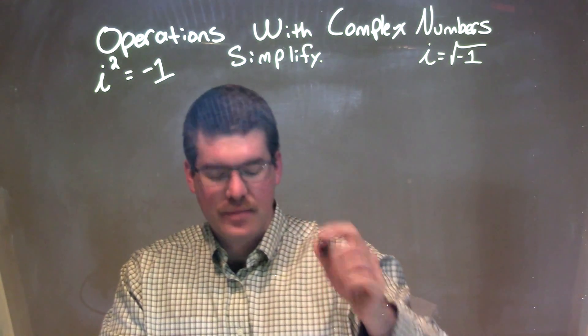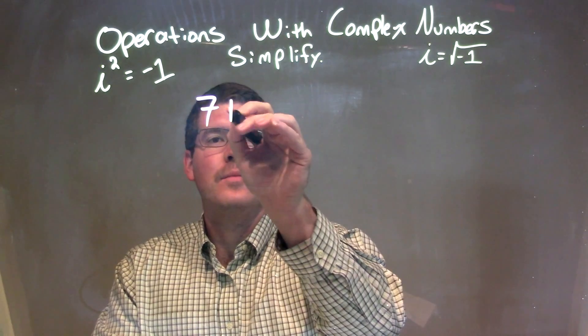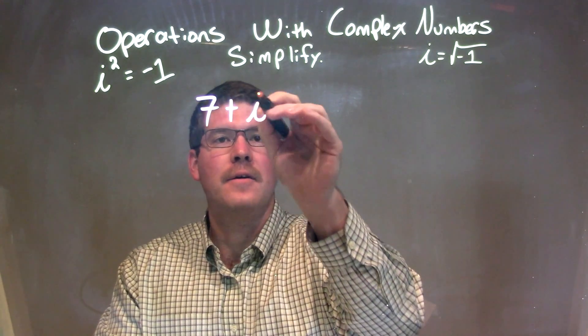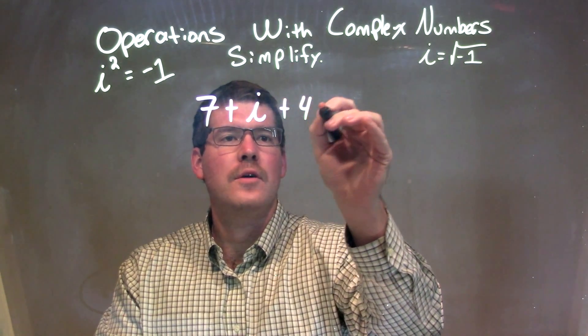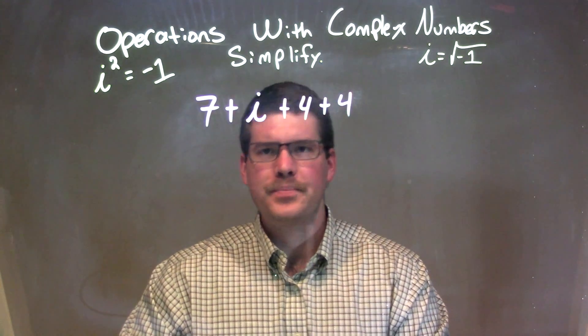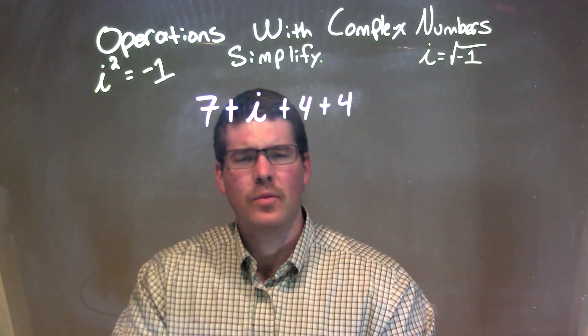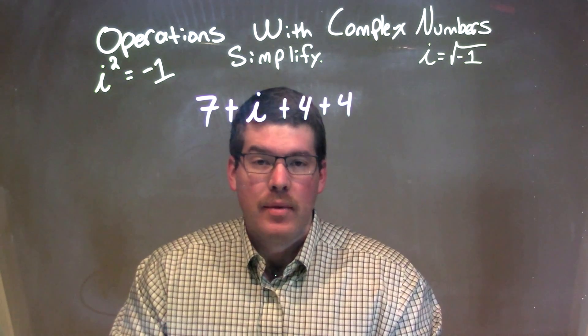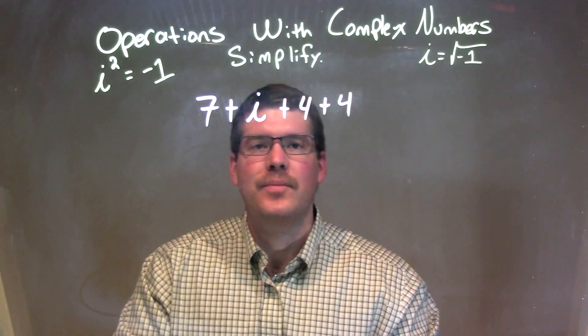If I was giving this 7 plus i plus 4 plus 4, when we simplify this, we want to essentially combine our like numbers.